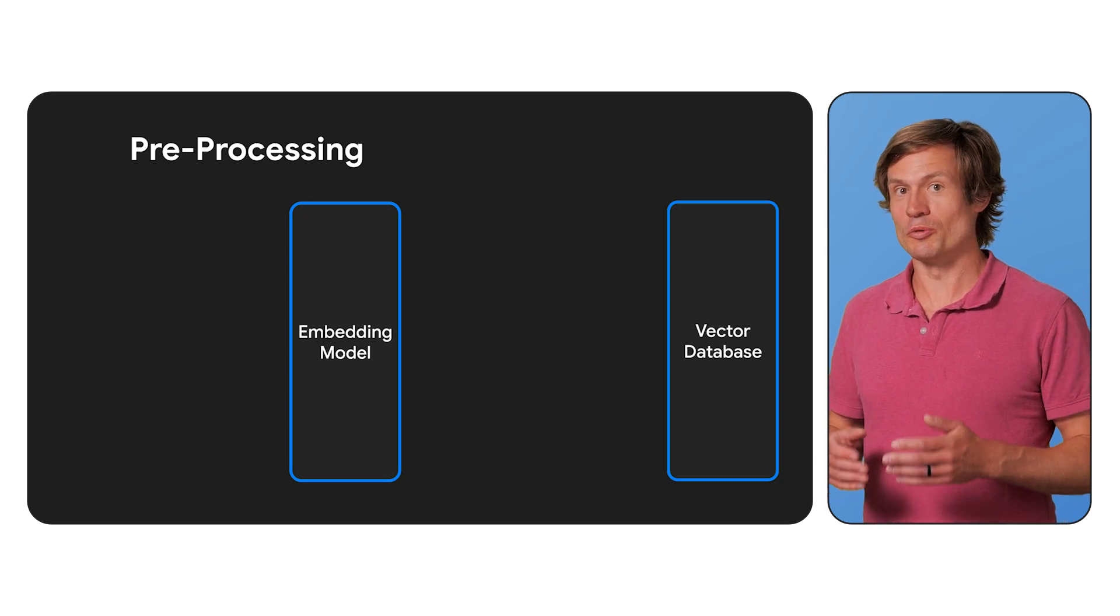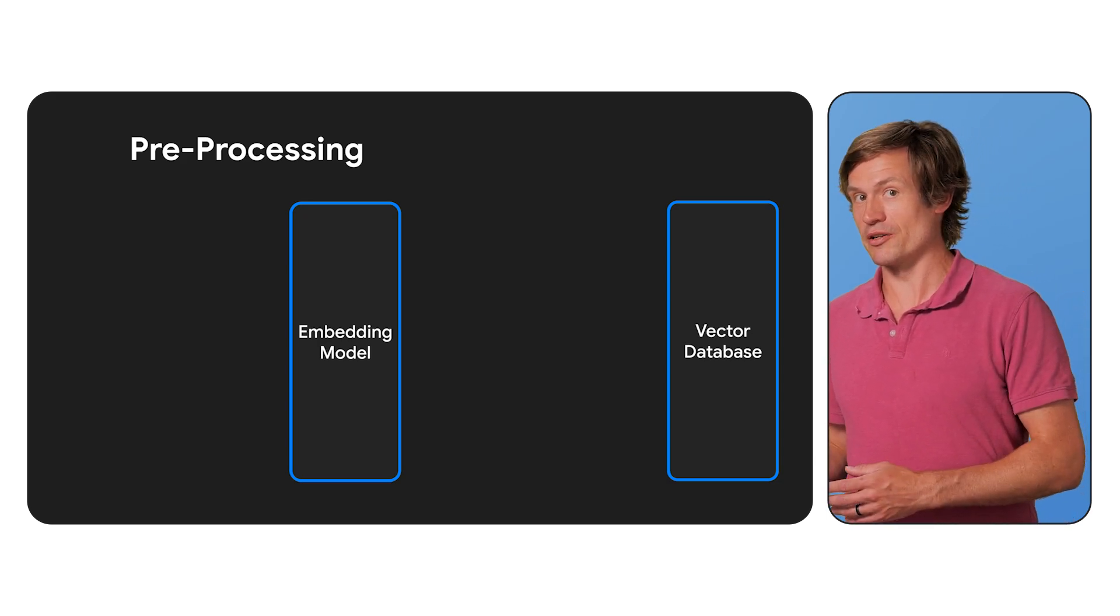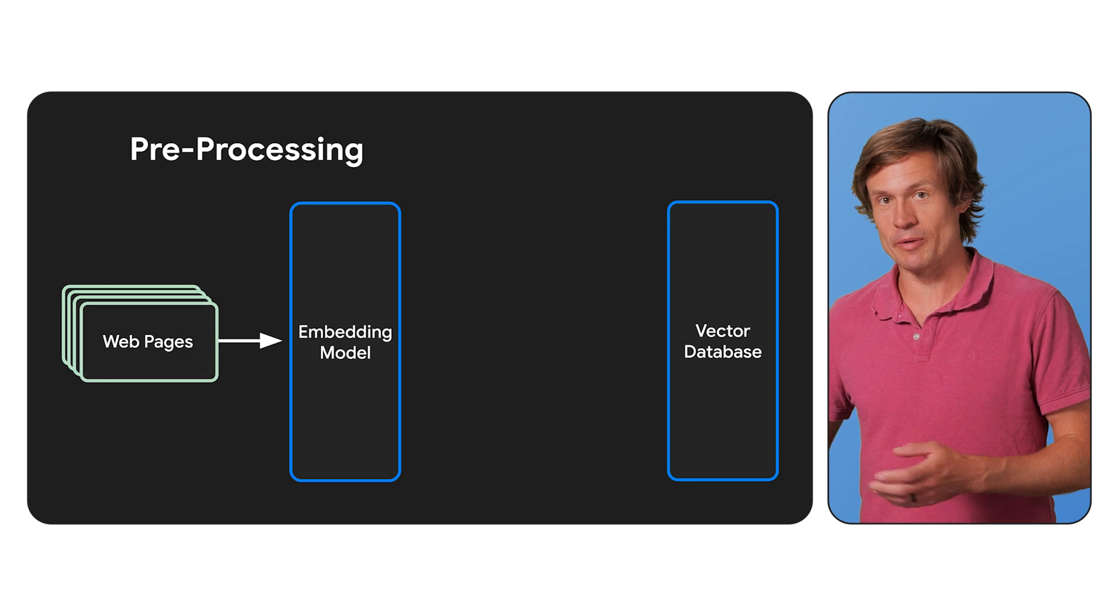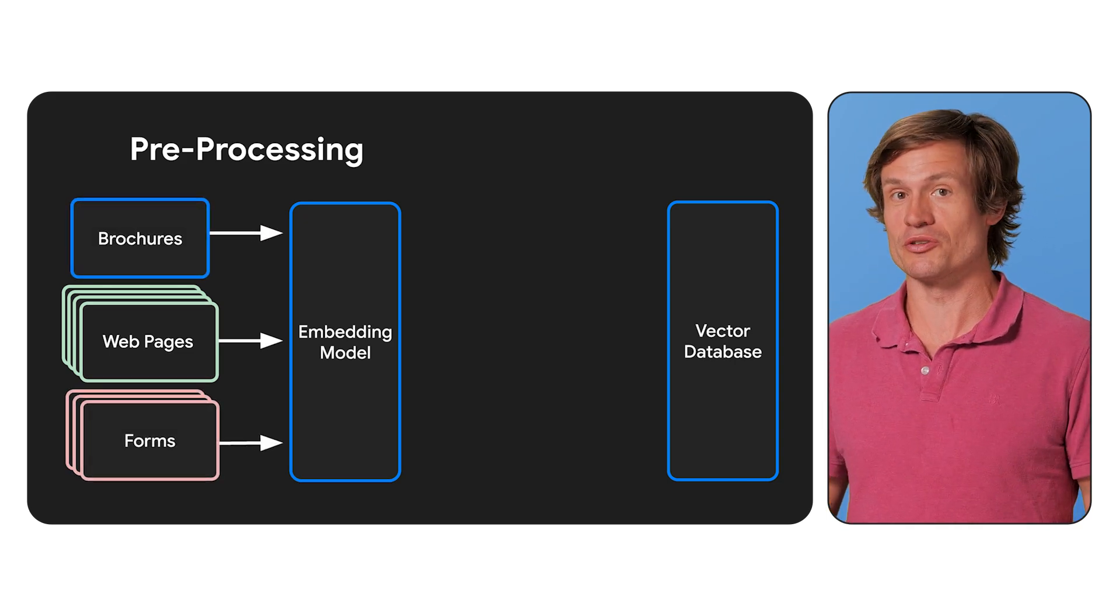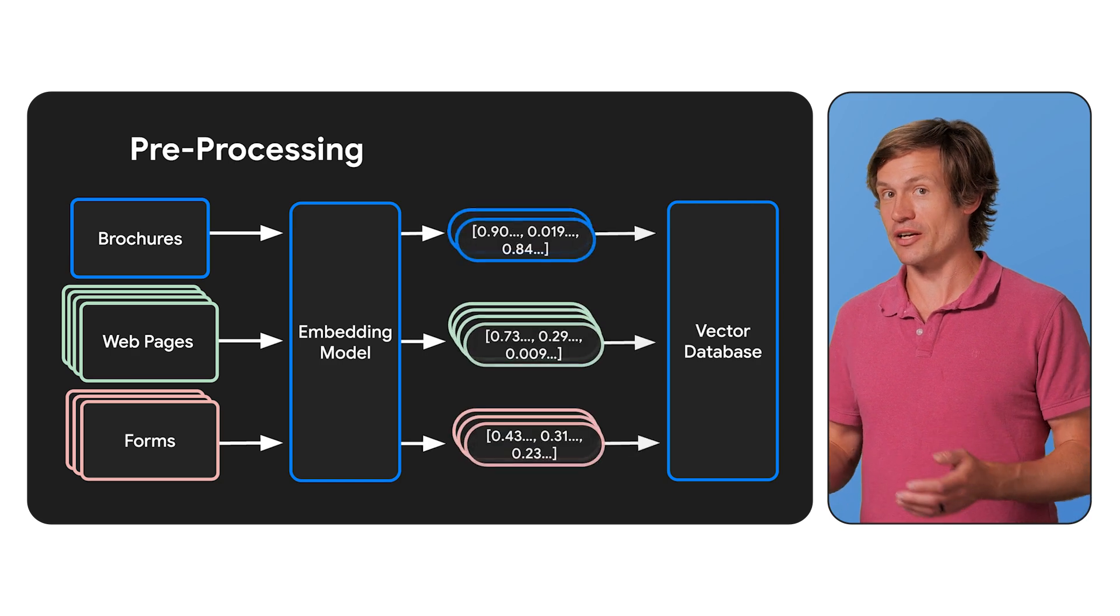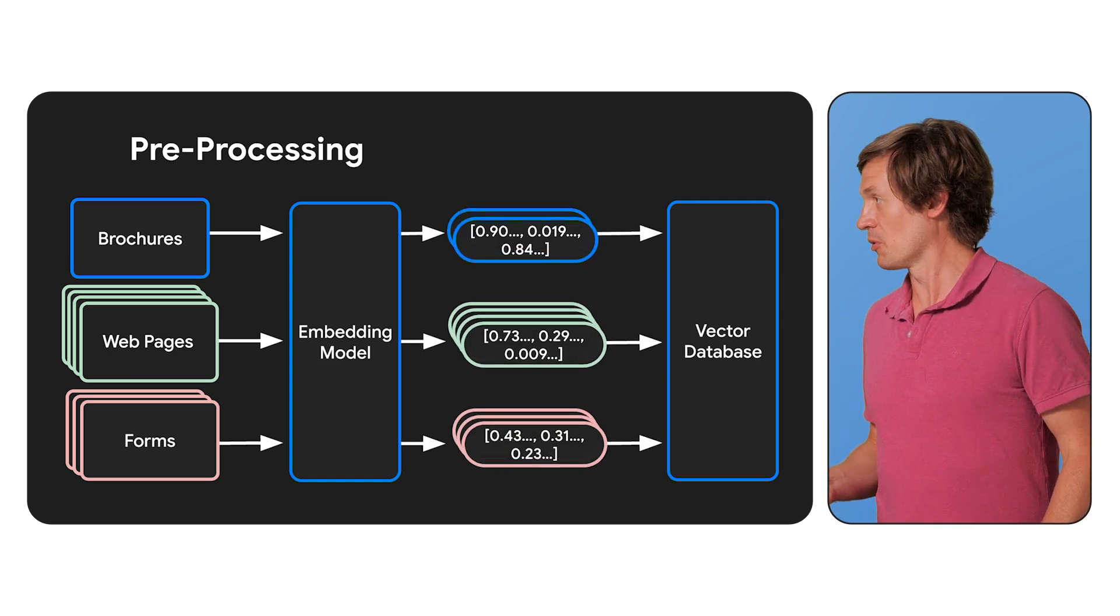Okay. And for this chatbot, we probably want to chunk and create embeddings for all maybe the different pages on our website, and maybe even for additional things like forms and brochures or images that we have. And we should store all that data with their embeddings in a vector database.